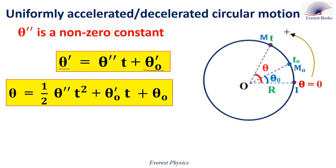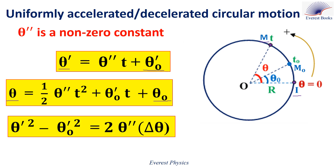In the second relation: θ = ½θ''·t² + θ'₀·t + θ₀. Here θ is the angular abscissa of M. Looking at the figure, I is the origin and M is the position at instant t, so θ is the angle between the two semi-lines OI and OM. θ₀ is the initial angular abscissa — the angle between OI and OM₀ at time zero. In the third relation: θ'² − θ'₀² = 2θ''·Δθ, where Δθ = θ − θ₀.